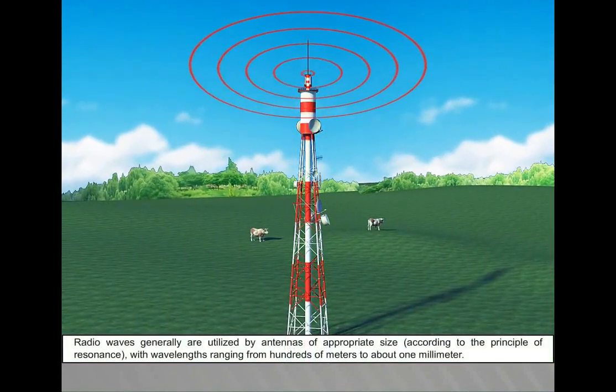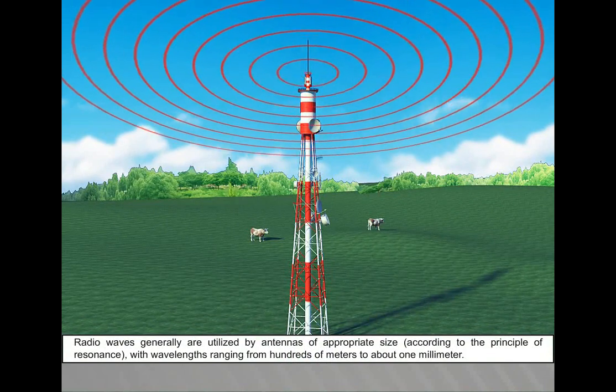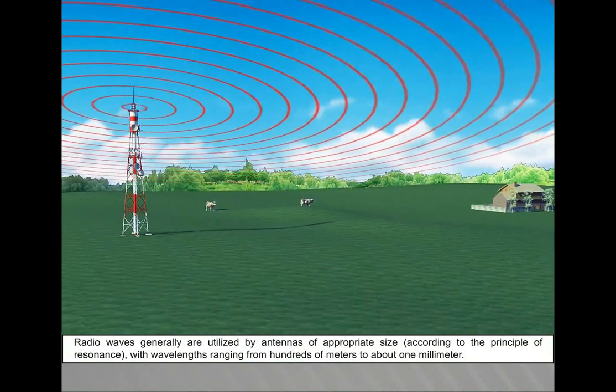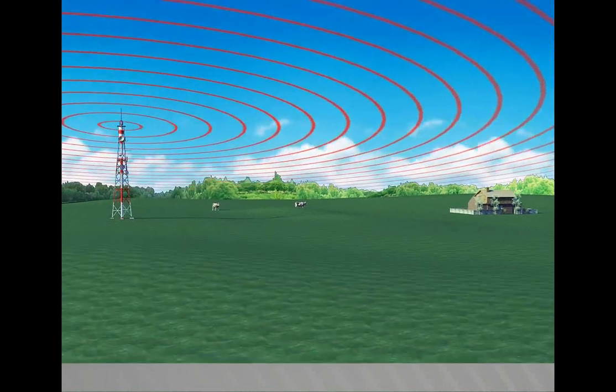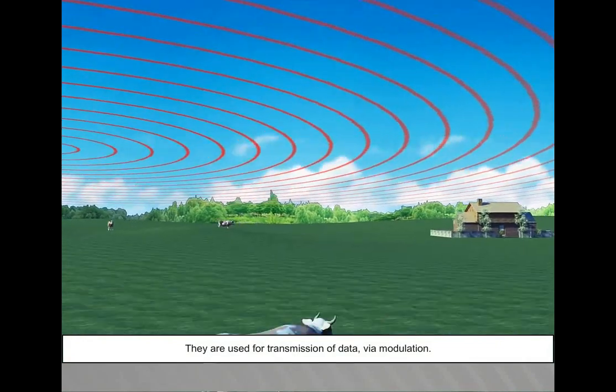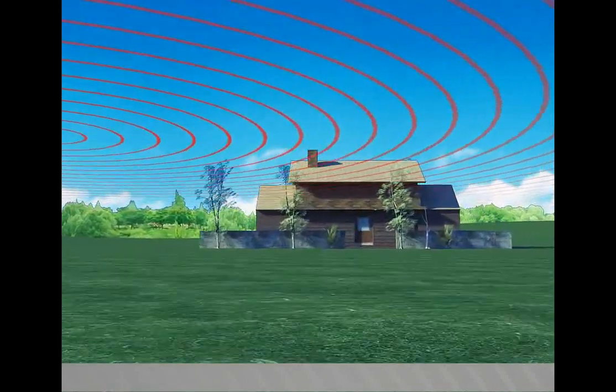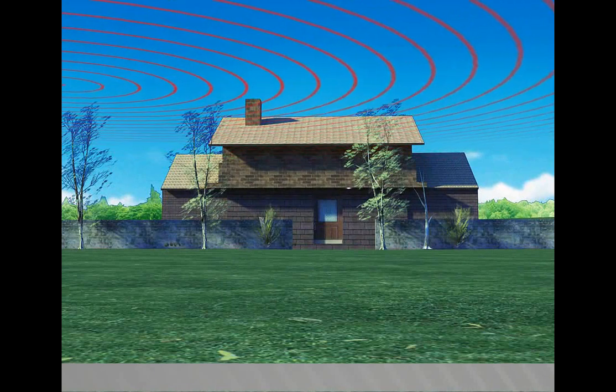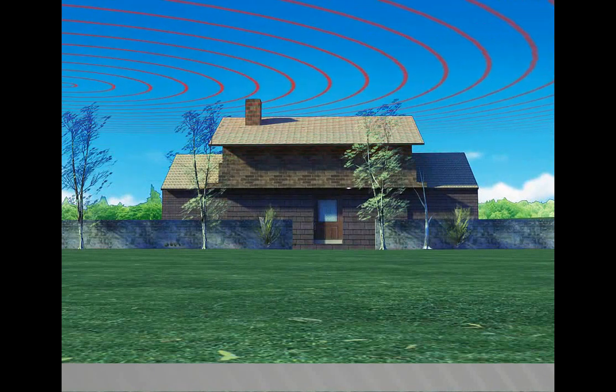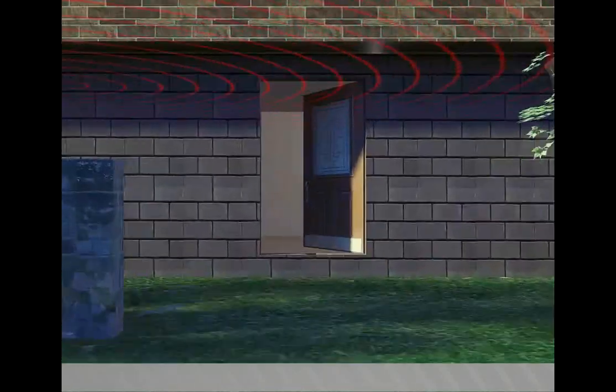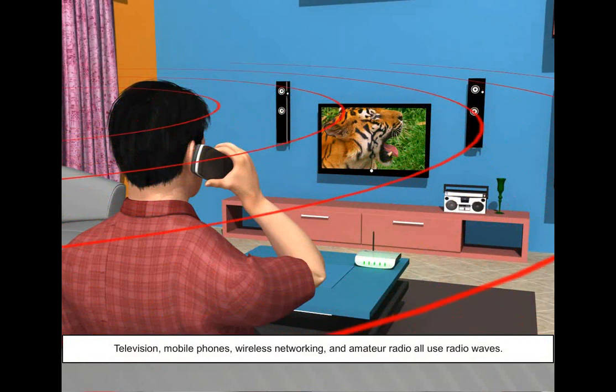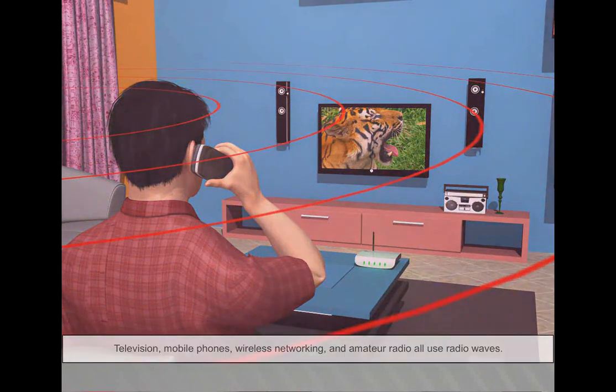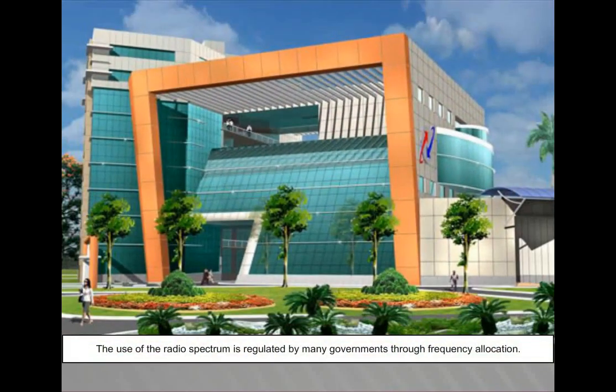Radio waves generally are utilized by antennas of appropriate size according to the principle of resonance, with wavelengths ranging from hundreds of meters to about 1 millimeter. They are used for transmission of data via modulation. Television, mobile phones, wireless networking, and amateur radio all use radio waves. The use of the radio spectrum is regulated by many governments through frequency allocation.